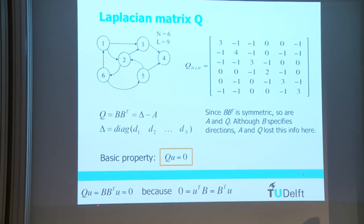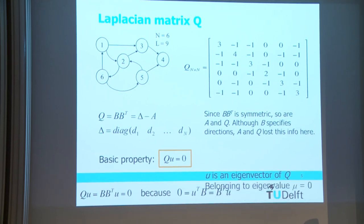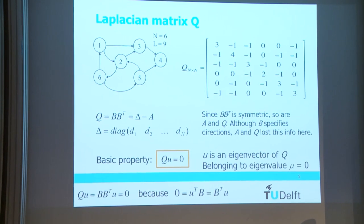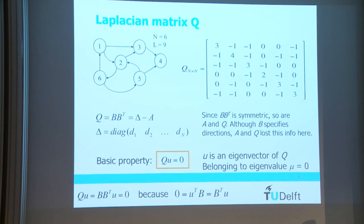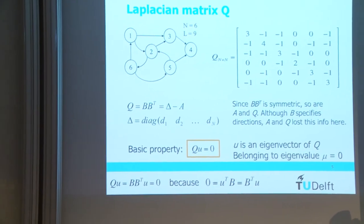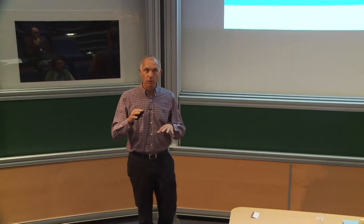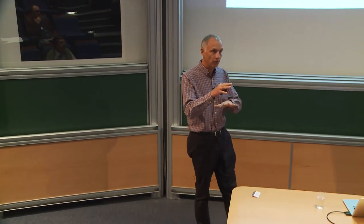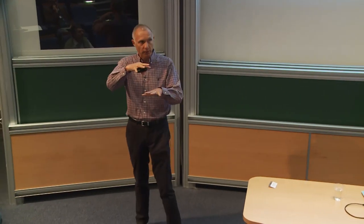This property comes from the incidence matrix relation, and I stress it because I will use it again and again. It also means that the direct inverse of the Laplacian matrix does not exist. Now I come to network science.